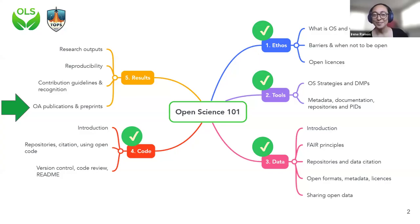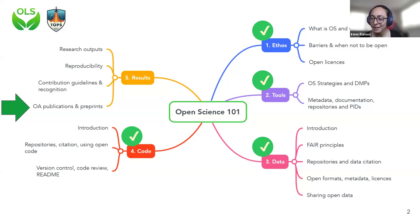I'm going to share my screen to do a quick recap of where we are in the program. Can you see the screen? Okay, so as I was saying, we are in the results module and we're going to cover open access publications and preprints today. Because this is the last training session, we're going to bring together many of the concepts we have been learning about since the beginning of the program, which was exactly one month ago.